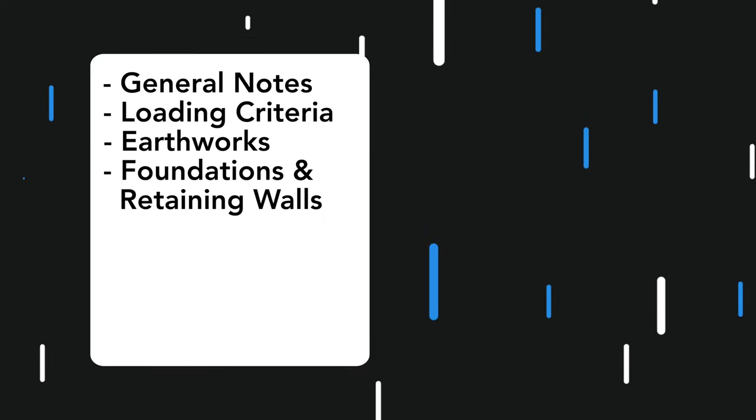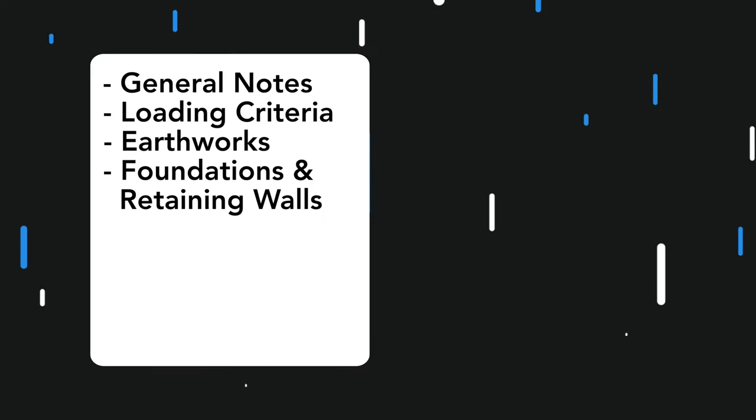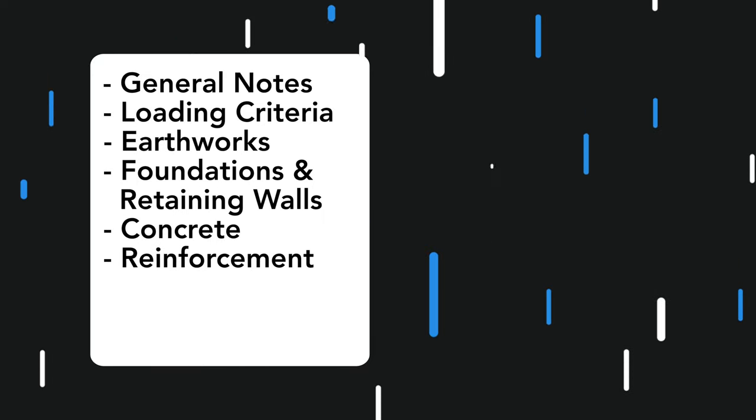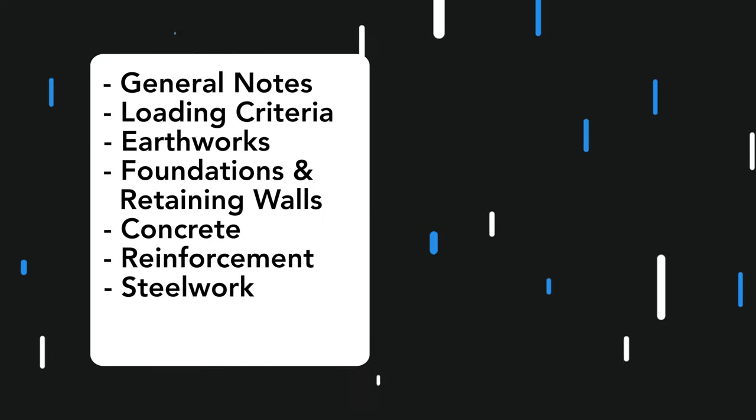The types of things covered in a notes section will vary a little bit project by project, but there are some common things that appear on almost every drawing set. Some of these parts are: general notes, loading criteria, earthworks, foundations and retaining walls, concrete, reinforcement, and steelwork.